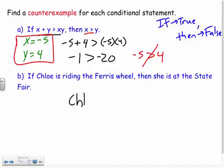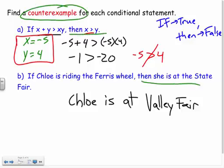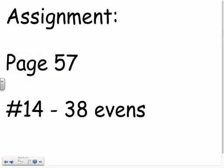So I would say, Chloe is at Valley Fair. So just because she's on a ferris wheel doesn't mean she's at the state park. So my counterexample would be Chloe's at Valley Fair. She could still be on the ferris wheel. So you just provided a counterexample. Remember, counterexample to make the then false. To make the then false. Here's your assignment. We'll see you tomorrow.